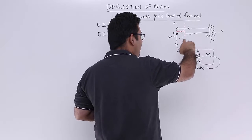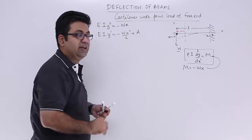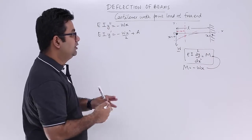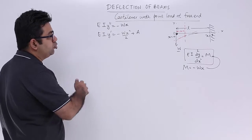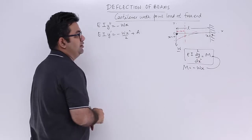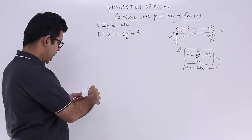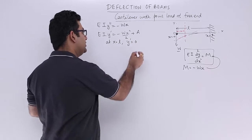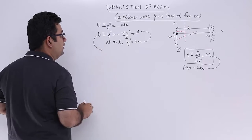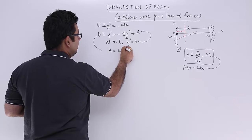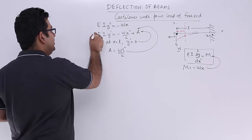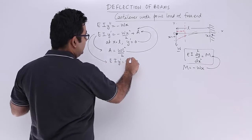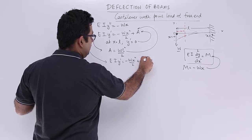Looking at the figure, this curved line is the shape of the deflected beam. The slope at the fixed end where x equals L is zero — there is no slope. So at x equals L, the slope y-dash equals 0. Putting this boundary condition into the equation gives the value of A as WL² by 2.